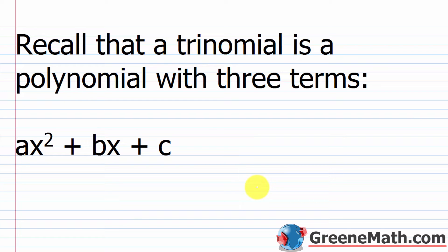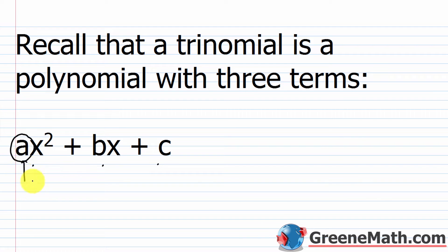I want to start by talking about what a trinomial is and how we're going to factor it into the product of two binomials. A trinomial is a polynomial with three terms. The generic example is ax squared plus bx plus c — three terms. In this particular case, we're going to factor this trinomial where the leading coefficient, represented by a, is going to be 1, and it's going to be factored into the product of two binomials.